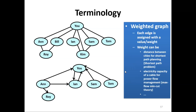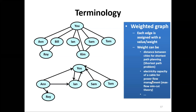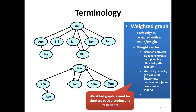In a weighted graph, each edge is assigned a value — whether directed or undirected. This can be used to represent the distance between cities to find the shortest path, or to represent the electricity capacity of a cable, which can help manage power flow. The weighted graph is also used for shortest path planning and airline routes.